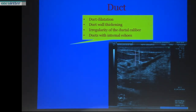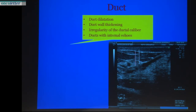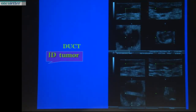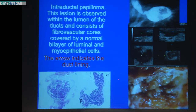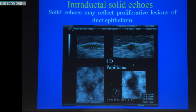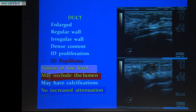For intraductal proliferation, you can see a larger duct with proliferation inside — it is about two millimeters in thickness. This is a classic intraductal papilloma with a core. However, we are seeing more and more papillomas where we cannot see the duct clearly — only the extension of proliferation inside. It is very difficult to visualize these as a typical papilloma, and in these cases a core biopsy must be performed.